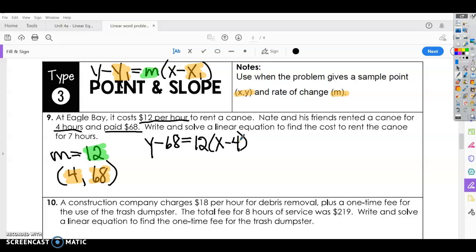Now you just want to clean this up a little bit. So you're going to use distributive property to get rid of the parentheses. Y minus 68 equals 12 times x. And then 12 times negative 4. And then we can add 68 to the other side. And this puts it in another form, slope-intercept form, which we talked about earlier. So negative 48 plus 68 is positive 20.